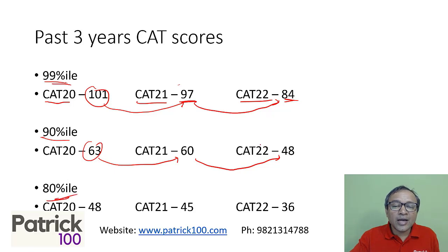If you compare CAT 20 and CAT 22, the marks required to get an 80 percentile in CAT 20 is the same as the marks required to get a 90 percentile in CAT 22.